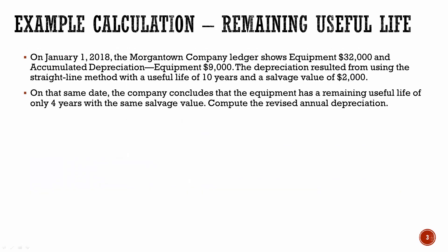Let's look at an example. On January 1, 2018, the Morgantown Company ledger shows equipment valued at $32,000 and accumulated depreciation of $9,000. That depreciation resulted from using the straight-line method with a useful life of 10 years and a salvage value of $2,000. On that same date, the company concludes that the equipment has a remaining useful life of only four years with the same salvage value.